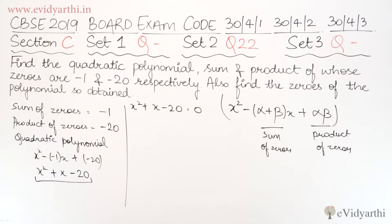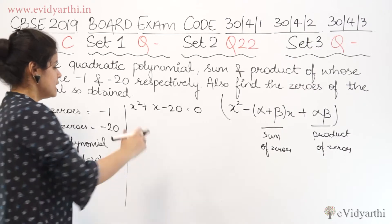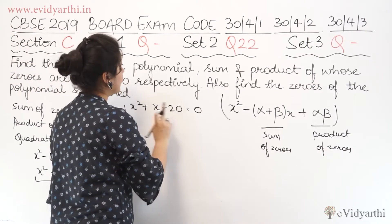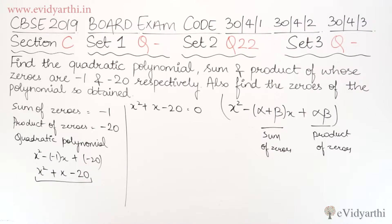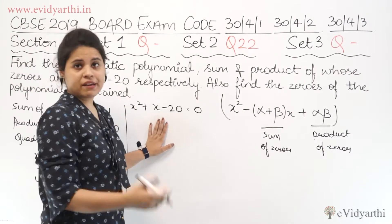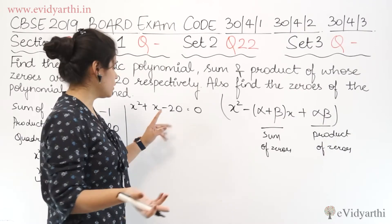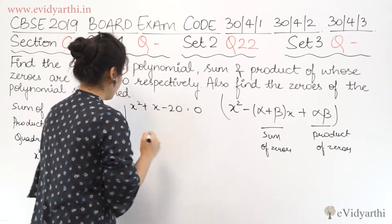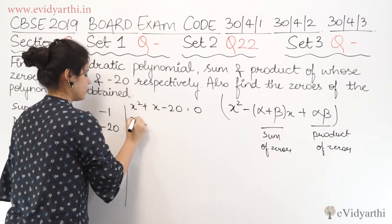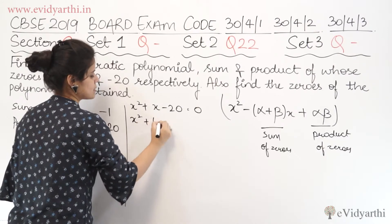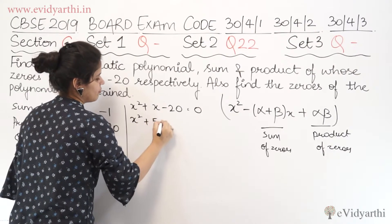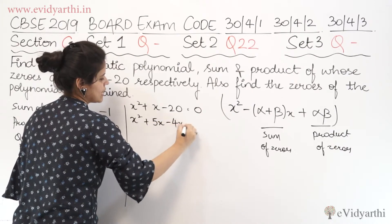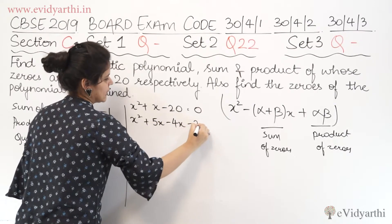Now we find the zeros here. We need to split the middle term — multiply 20 and find two numbers. We split x squared plus x minus 20 as x squared plus 5x minus 4x minus 20.